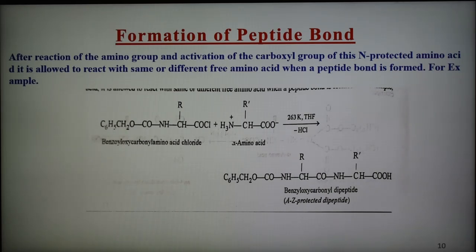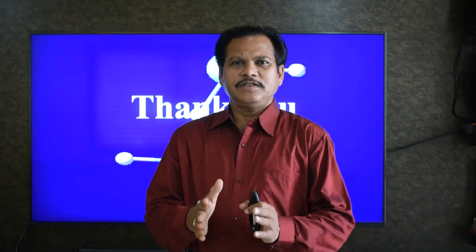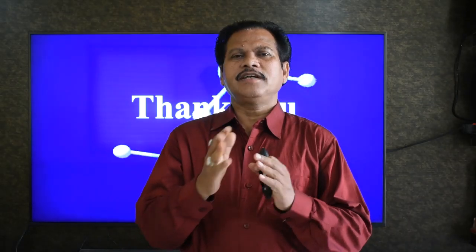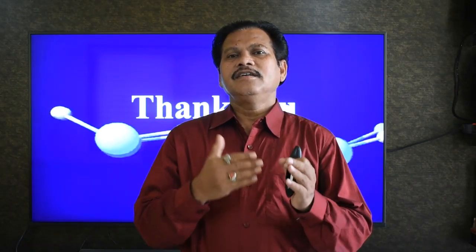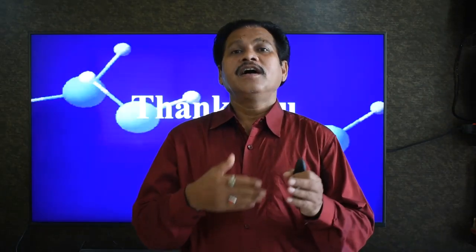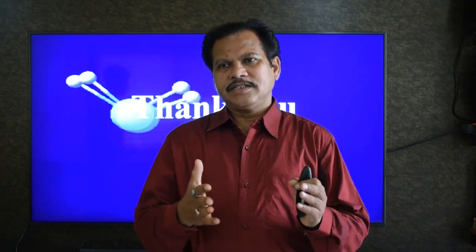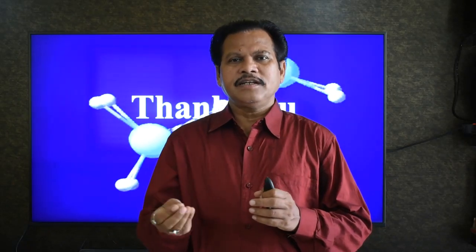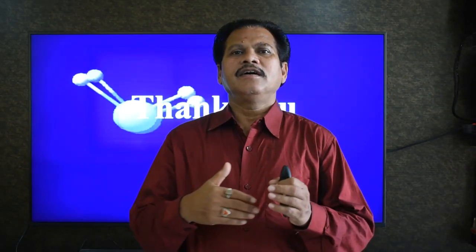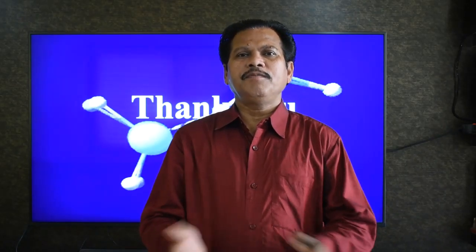So today we have discussed what is peptide, what are the types of peptide bonds and peptide linkage, the classification, the structure of polypeptides, peptide bond geometry, formation of peptide bonds, and the synthesis of peptide compounds using amino acids. CONH is the peptide bond or peptide linkage, and we have discussed the formation of this peptide linkage using alpha amino acids.